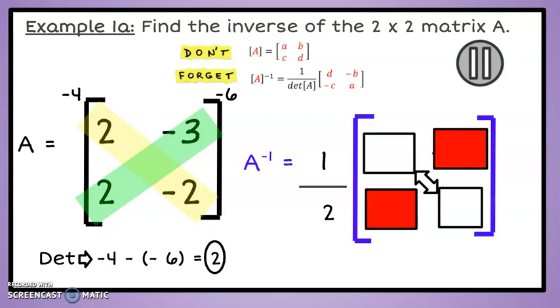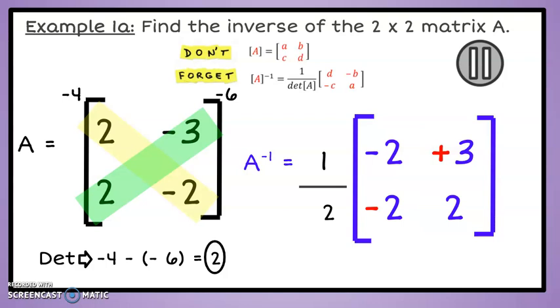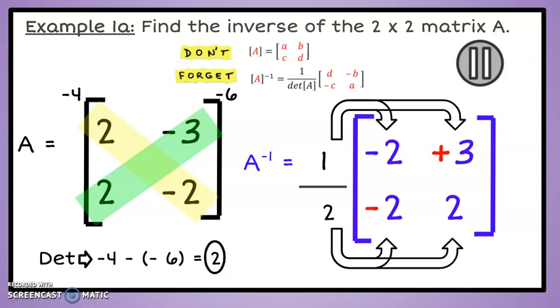Now we will use our learning about the diagonals. The elements of the main diagonal will switch places. The elements of the other diagonal will have opposite signs. Finally, we will divide all elements by our determinant of 2, or think of it as multiplying by the scalar of 1 half. This gives our final inverse matrix for A.